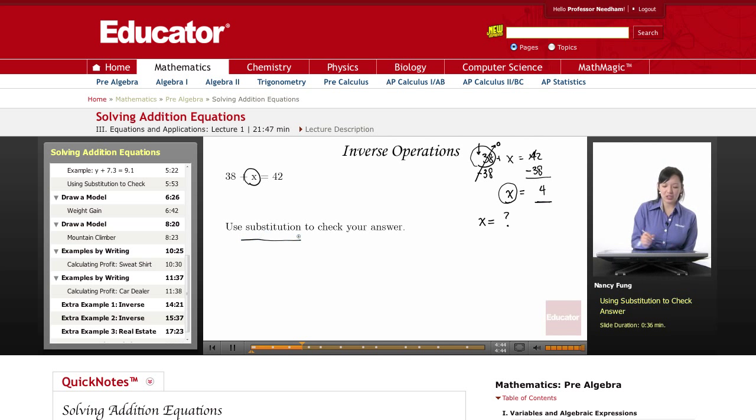It's a good idea to use substitution to check your answer. Although it takes a little bit longer, in the beginning when you're learning about solving equations, it's a really good way to check and make sure that you're understanding what you're doing. So I've just found out that x equals 4. So I'm going to go back to the original equation here and put 4 in. 38 plus 4 equals 42. And 38 plus 4 is 42. So yes, it's true. I've done the problem correctly and x does equal 4.